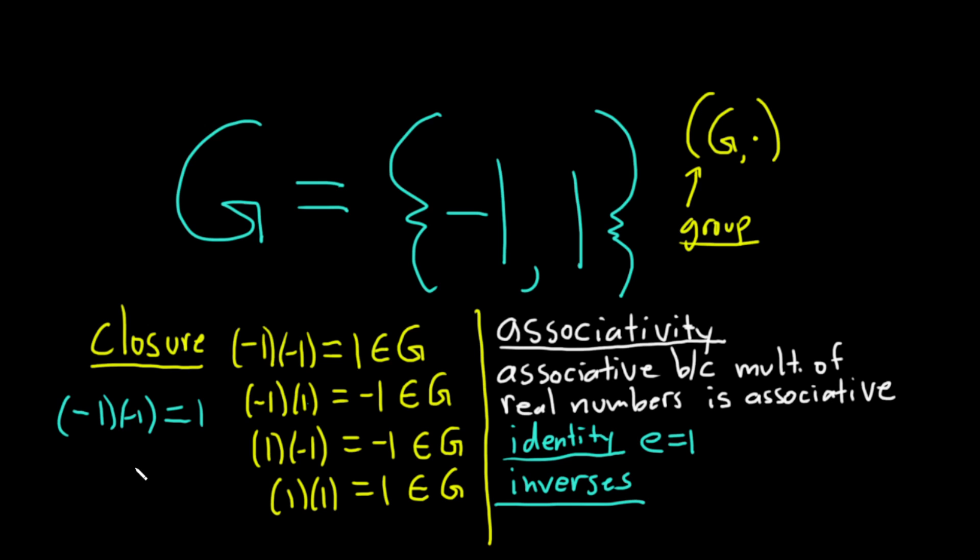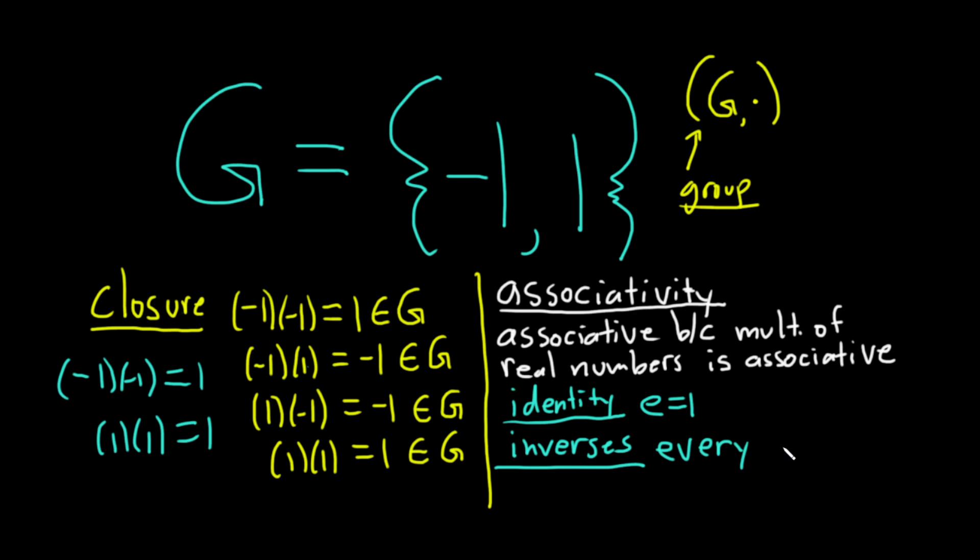Negative one is the inverse of negative one. And likewise, you multiply one by one to get one. And so every element is its own inverse, is its own inverse.